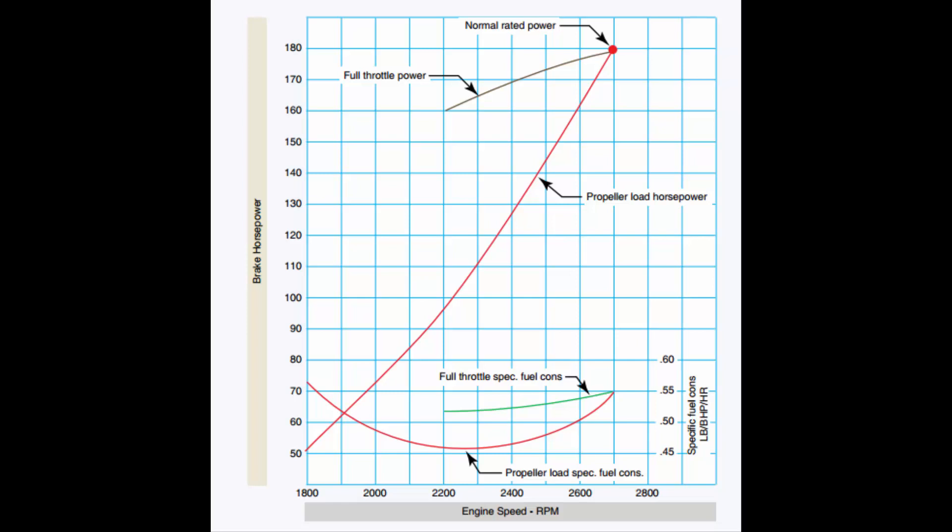We're going to go to this 2,350 RPM, and here we can see it intersects the horsepower curve. Then we go straight over to the left, and we read 118 horsepower. So back to the line, 2,350 RPM up to the prop brake load. And we're going to find the specific fuel consumption at 0.47 pounds.